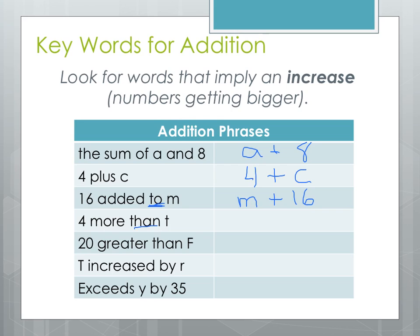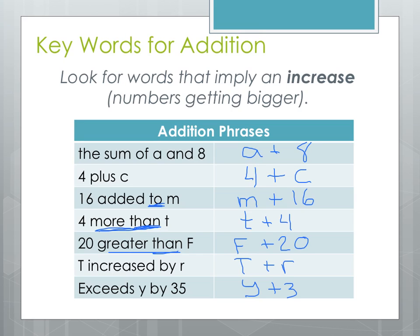6 more than T — 'more than' is a phrase that implies an order change too, so we start with T and then add 6 to it. 20 greater than F — that word 'than' again means we start with F and then add 20. T increased by R means we start with T and then increase it or add R to it. 'Exceeds Y by 35' means we start with Y and go beyond that by 35. Make sure to highlight these in your notes — the words 'to' and 'than' imply that the order will get switched in addition problems.